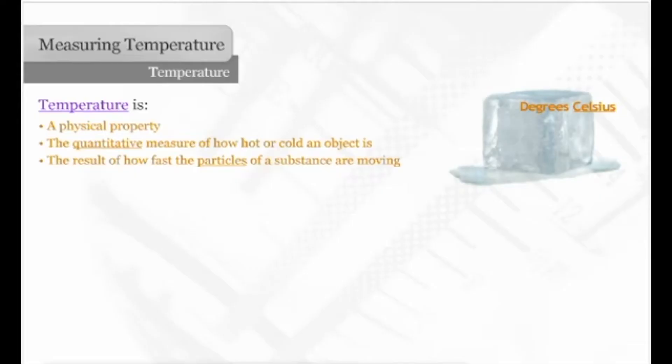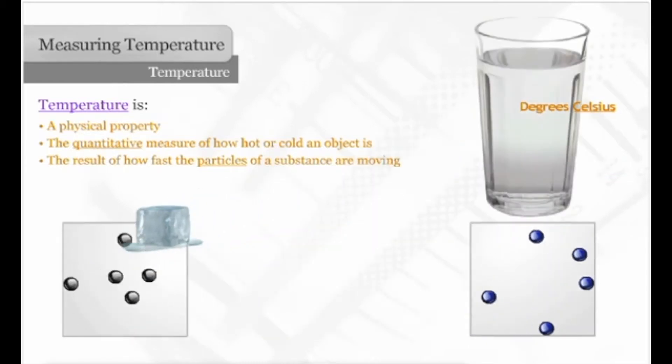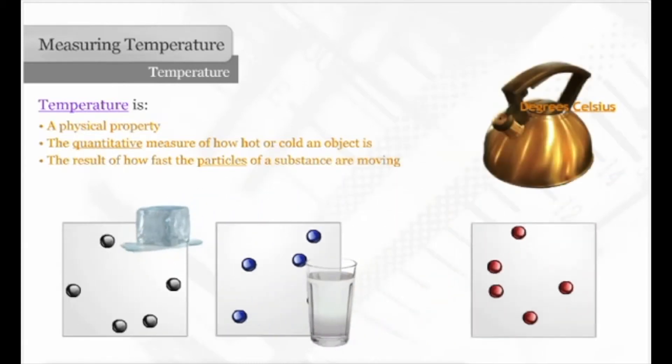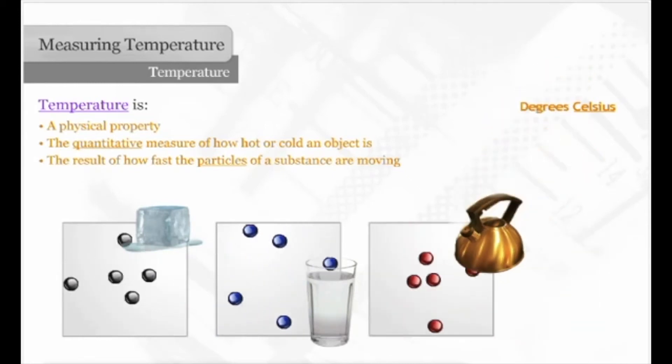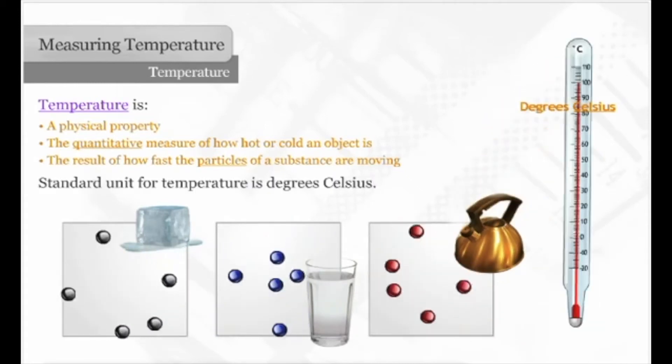Temperature is the result of how fast the particles of a substance are moving. The slower the particles move, the cooler the temperature. The faster the particles move, the warmer the temperature. The standard unit for temperature is degrees Celsius.